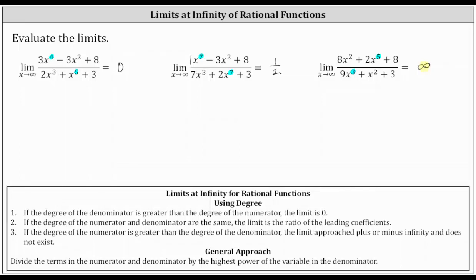Let's also take a look at a second approach. For the second approach, we divide the terms in the numerator and denominator by the highest power of the variable in the denominator. For the first limit, the highest power of the variable in the denominator is x to the fifth, so we divide each of the six terms by x to the fifth. In the second limit, the highest power is x to the seventh, so we divide every term by x to the seventh. For the third limit, the highest power in the denominator is x cubed, so we divide everything by x cubed.